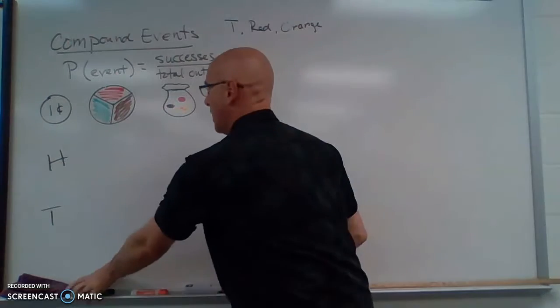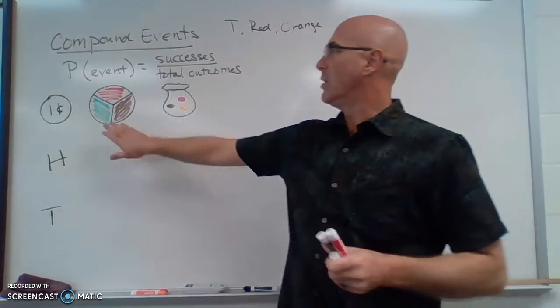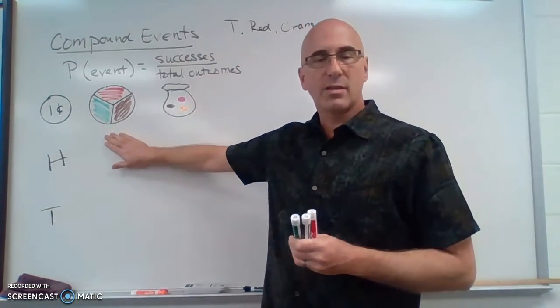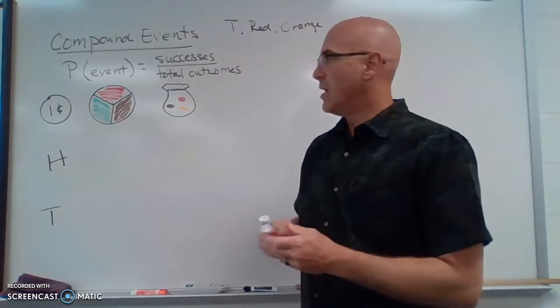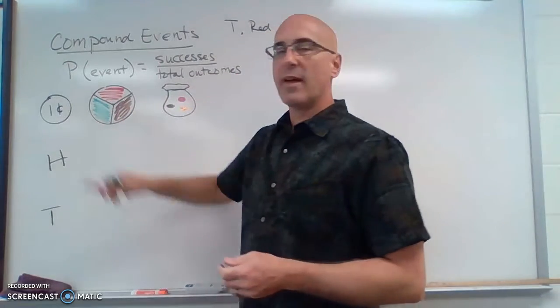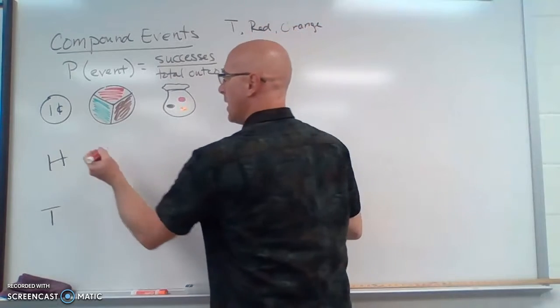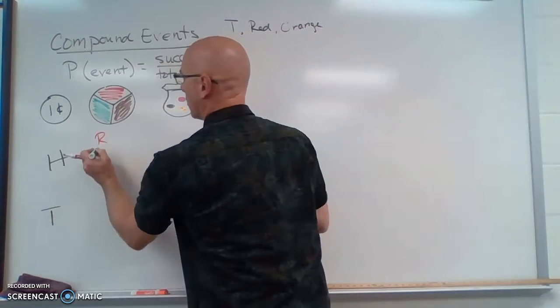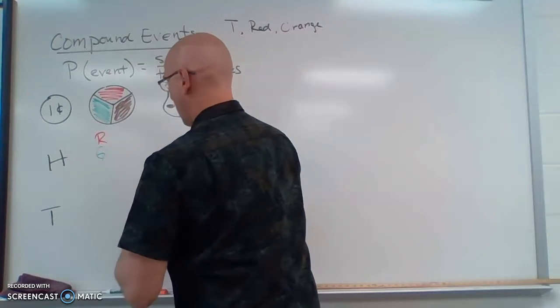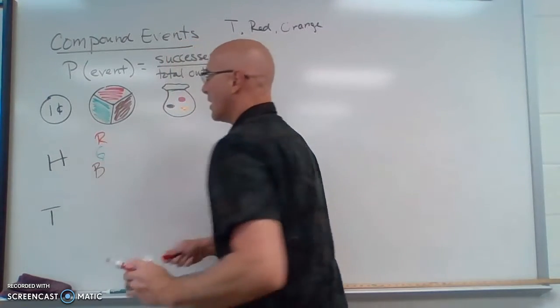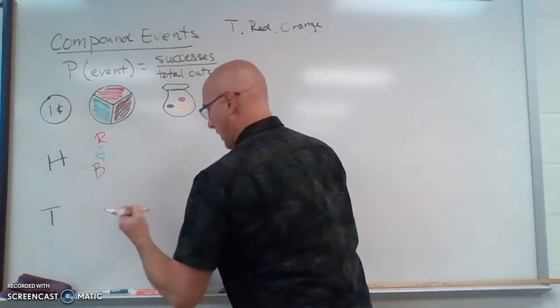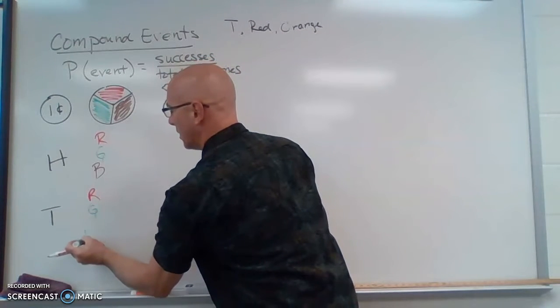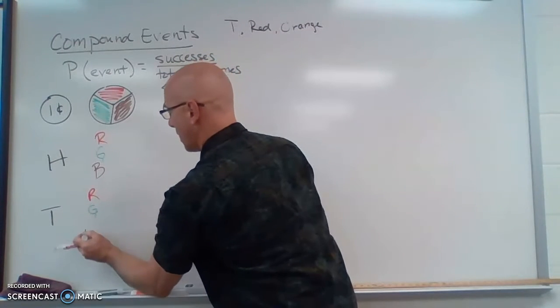Now, in our spinner, we have one of three possibilities. You get to get a red, green, or brown. So if I flip the head and then did my spinner, I could go red, green, or brown. If I flip the tail, I can also get a red, a green, and a brown.